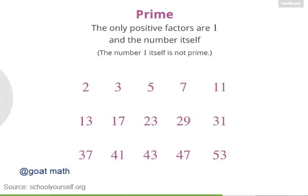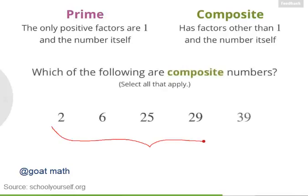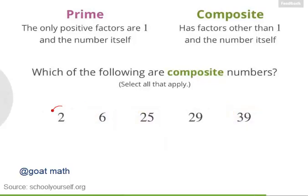Crazy, right? Okay, so those are the primes. All the other positive integers are called composite numbers — they have factors other than 1 and themselves. So which of these numbers here are composite? Nicely done. Now you already found that 2 is the smallest prime. 6 is composite because it has other factors, like 2 and 3. 25 is also composite — 5 is one of its factors. 29 is prime, and 39 is another composite because its factors include 3 and 13. There are a few tricks you can use to find if numbers have factors of 2, 3, and 5.